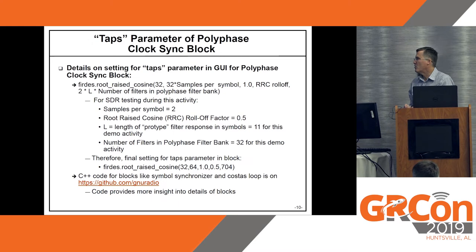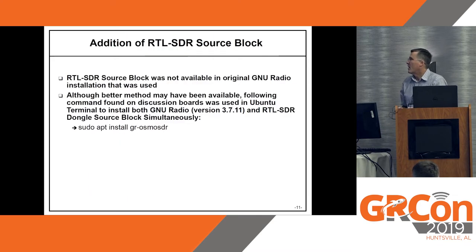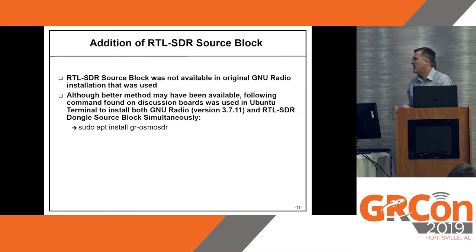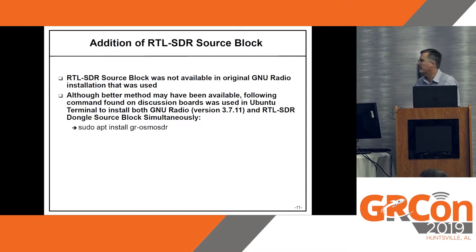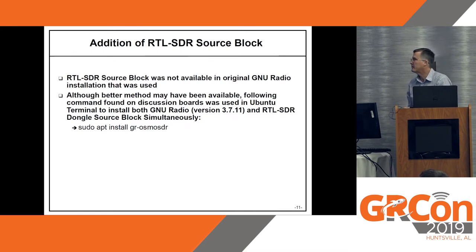The C++ code is on the GNU Radio GitHub, and that provides a lot of useful insight into the details of the blocks — I'm still going through it myself. For adding the RTL-SDR source block, I found one command for the Linux terminal: sudo gr-osmo-sdr. That allowed me to load the entire GNU Radio software along with the source block into the library.